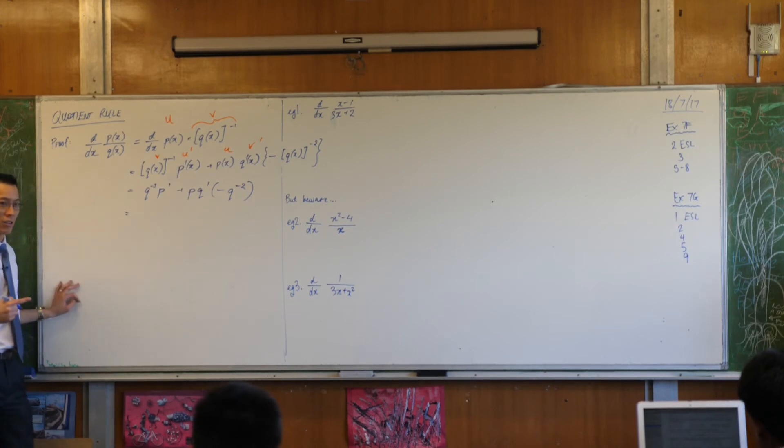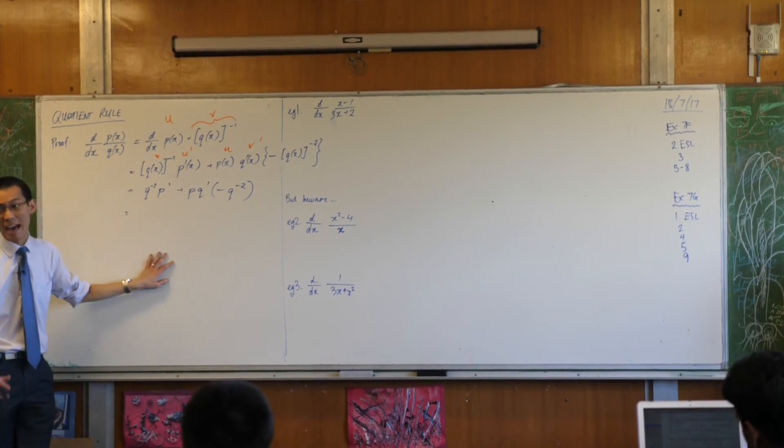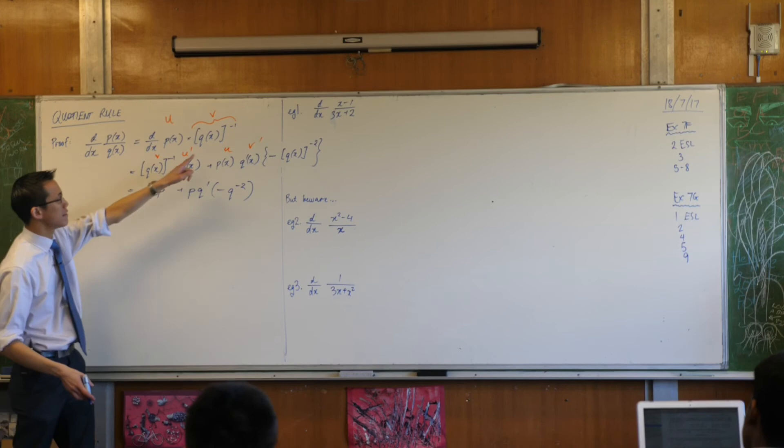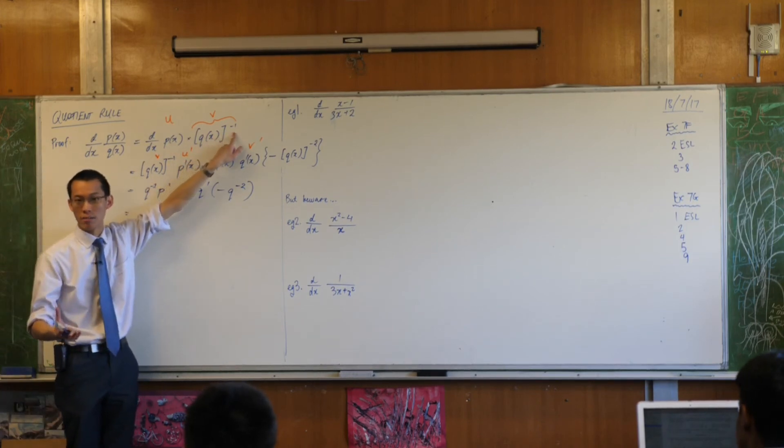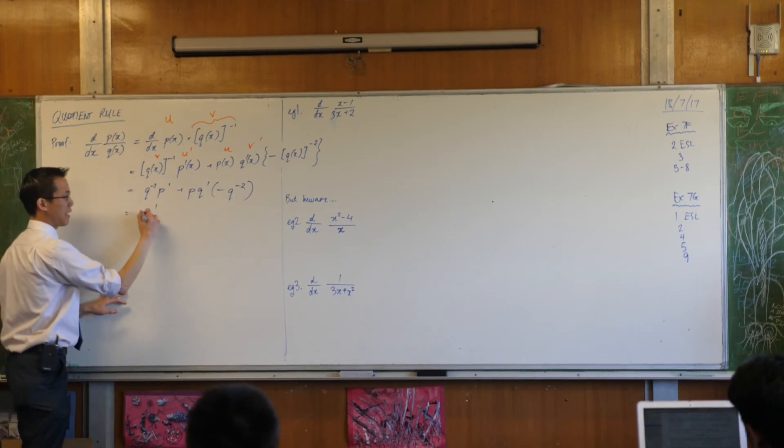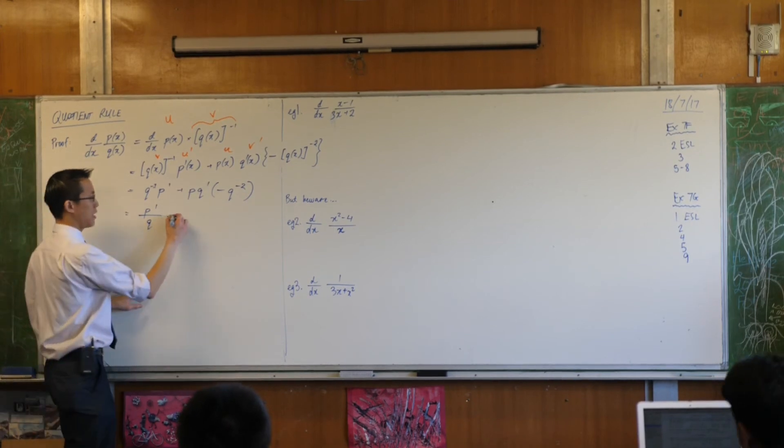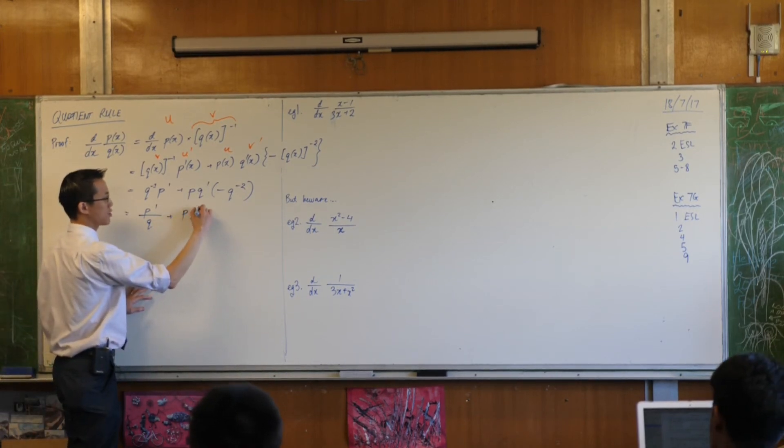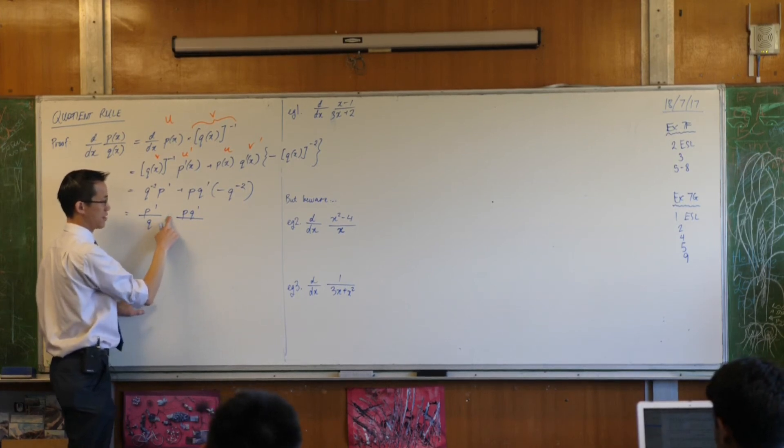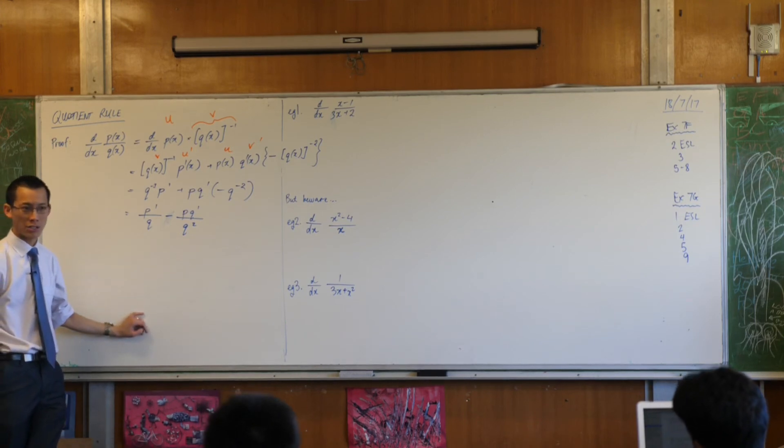I can go a step further. See these negative powers? I usually dislike writing things in negative powers. I usually prefer to write them as fractions. In fact, the only reason I write things in negative powers is so I can differentiate. So, I've got to get rid of all of the negative powers now. This makes this p dash on q. Over here, I've got pq dash on, I should really write this minus sign over here actually, on q squared. Are you happy with that?